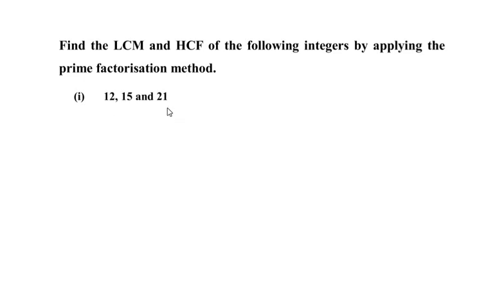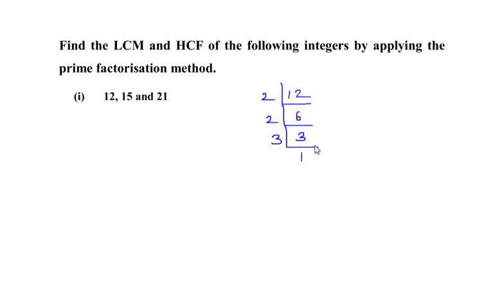They have given us three numbers, so I'm going to use the repeated division method to find the prime factors, starting with 12. 12 goes in the table of 2, so 2 times 6 is 12, then 6 also goes in the table of 2, so 2 times 3 gives 6, and finally 3 is a prime number so 3 times 1 gives 3. The prime factors used are 2 and 3, so I write the factors of 12 as 2 × 2 × 3.